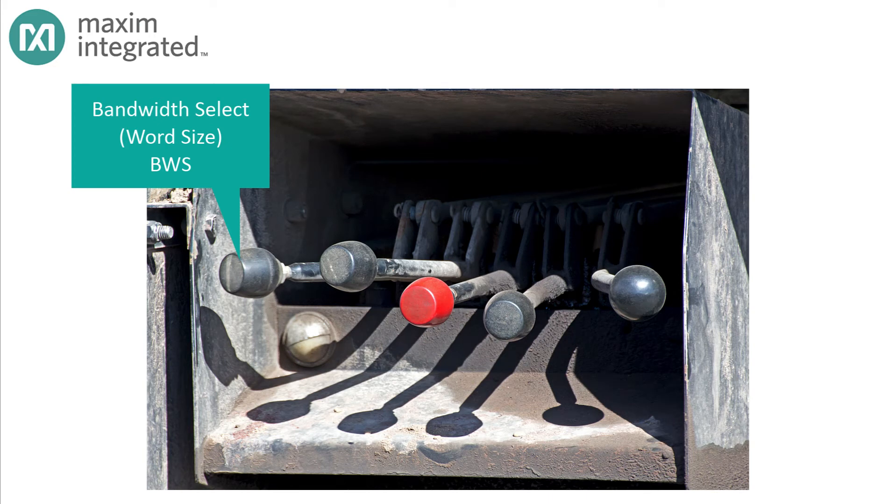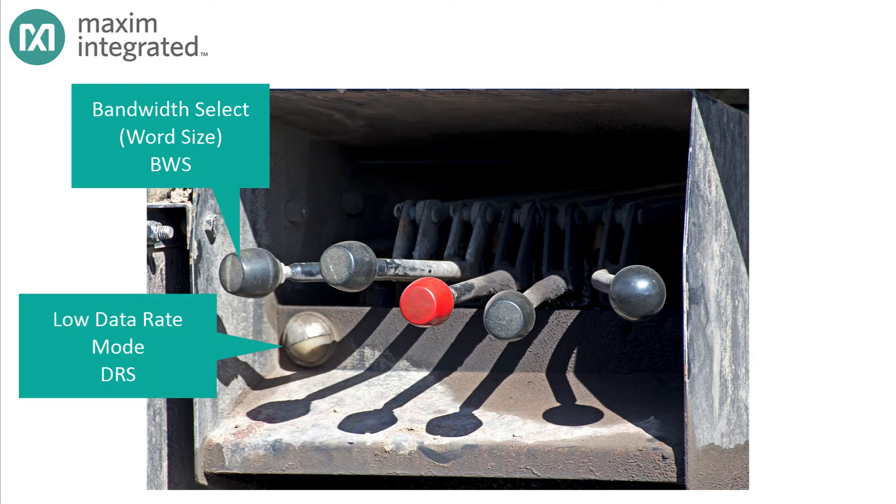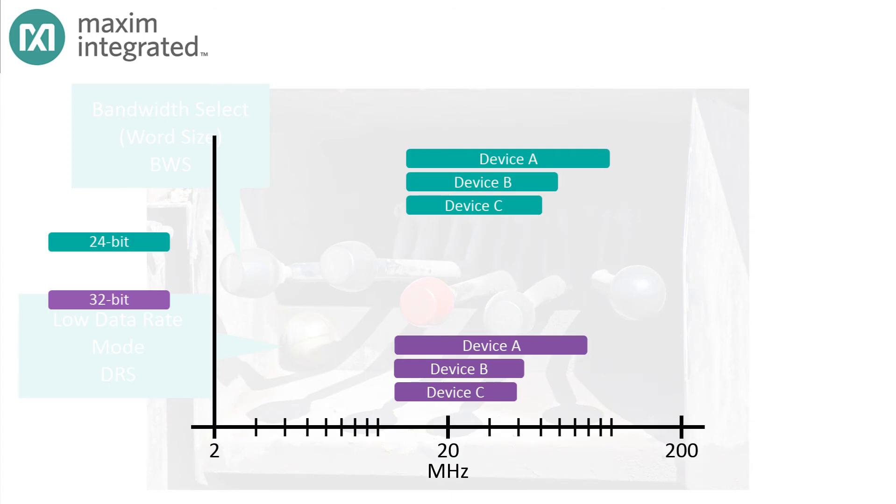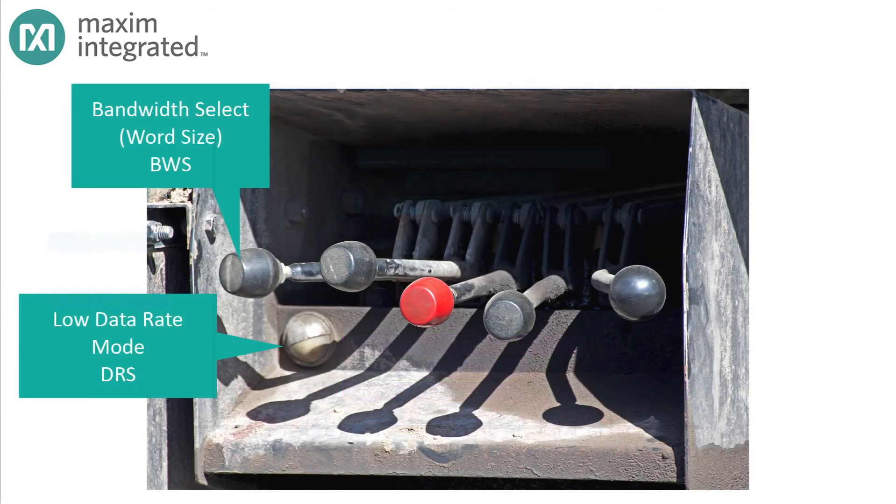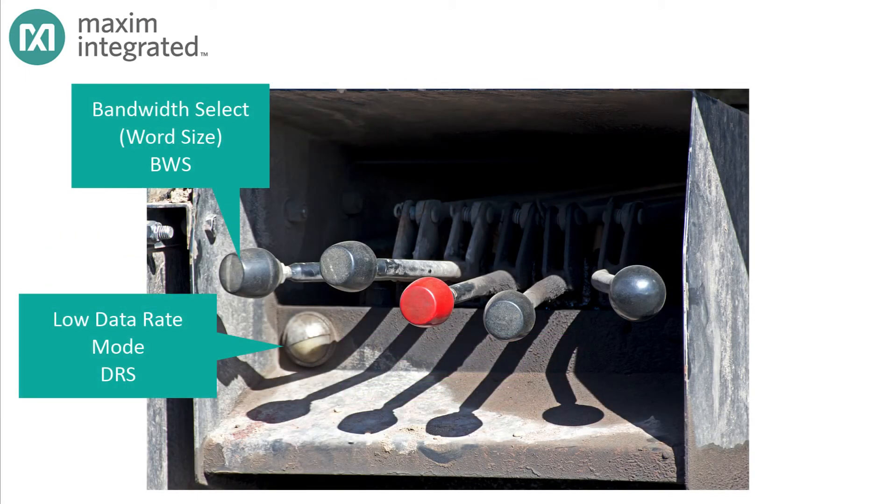Well, many GMSL serializers have a low data rate mode. That's the second lever. In this mode, the serializer sends each pixel multiple times, most frequently twice. That gets the effective pixel clock rate up to where it needs to be, and lets the actual pixel clock creep along at whatever speed. This lever is called Data Rate Select, or DRS, and it's available in some, but not all, Maxim serializers.